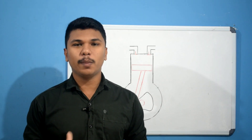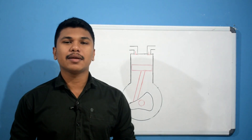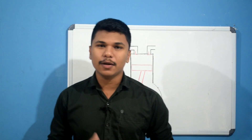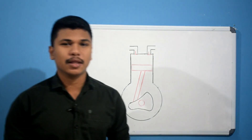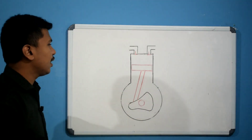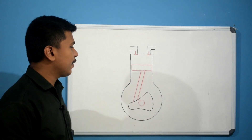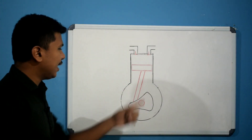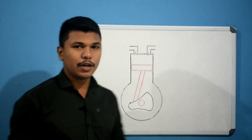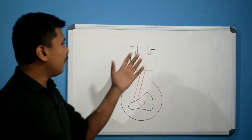Engine oil is a lubricant. It reduces friction in the moving contact parts of the engine. We have friction with the piston and cylinder, with the crankshaft, and with the valve actuating components.